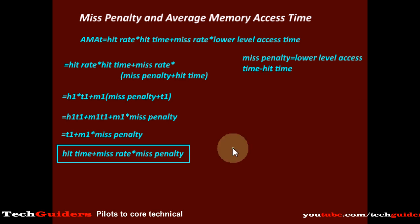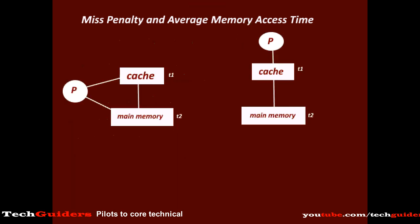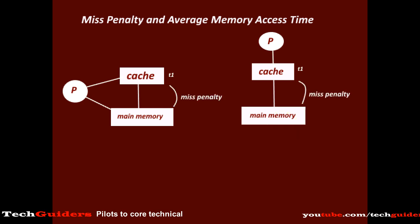So whether hierarchical or simultaneous access, the general equation for average memory access time in terms of miss penalty is: hit time plus miss rate times miss penalty. We can also apply this equation recursively to find the average memory access time for any number of levels. For a two-level hierarchy, where we know the miss penalty to the lower-most level, the average memory access time is: hit time plus miss rate times miss penalty to the lower-most level.